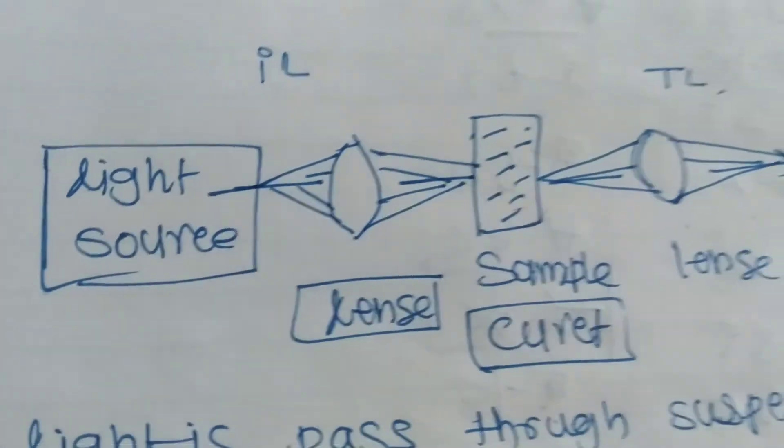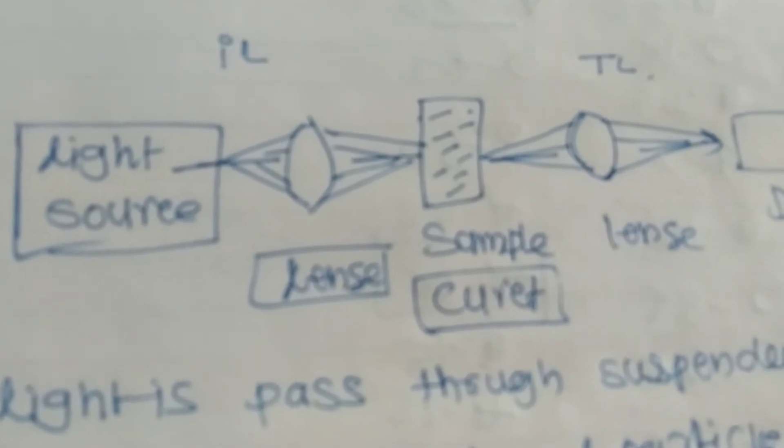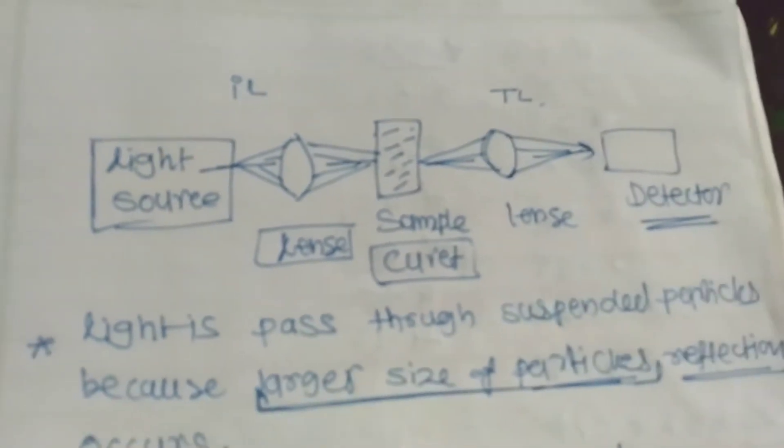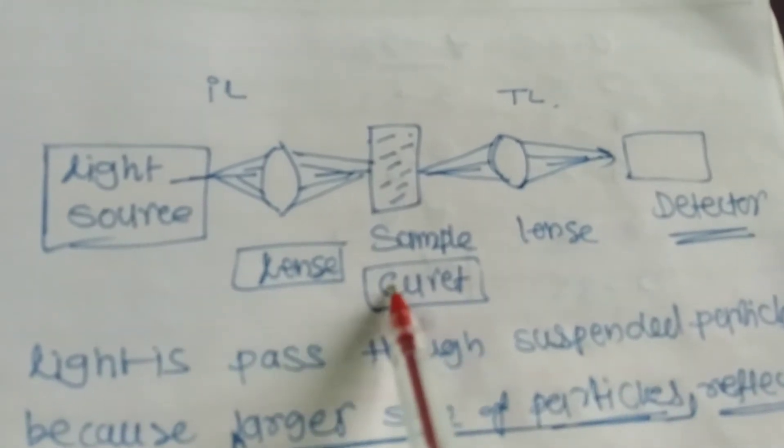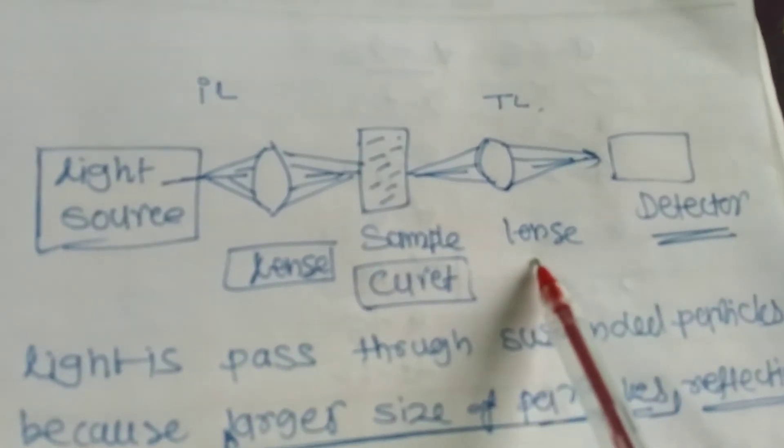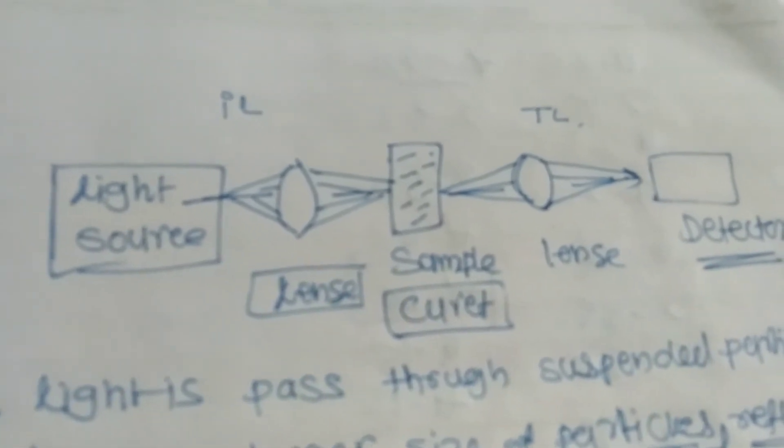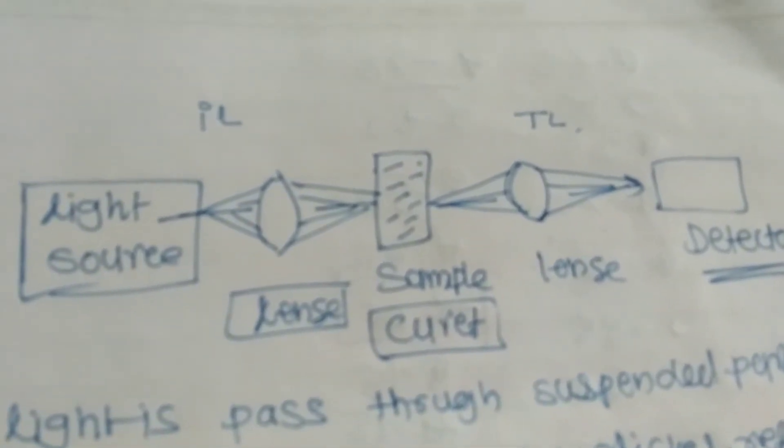Generally, turbidimetry involves light source, lens, sample or cuvette, second lens, and detector. This is all about turbidimetry.